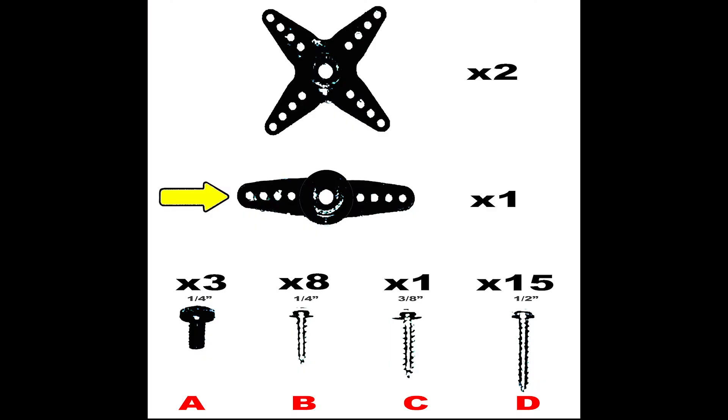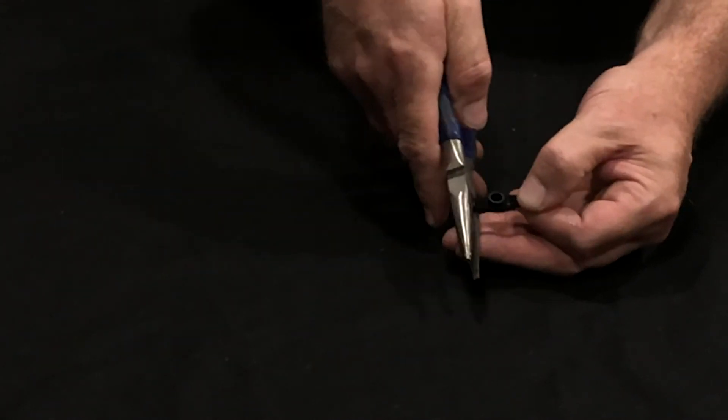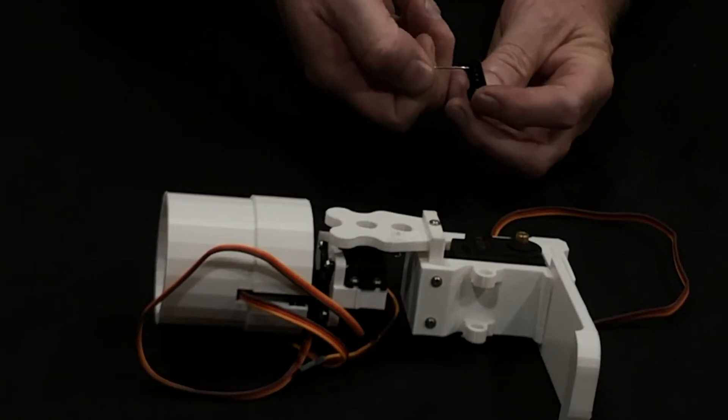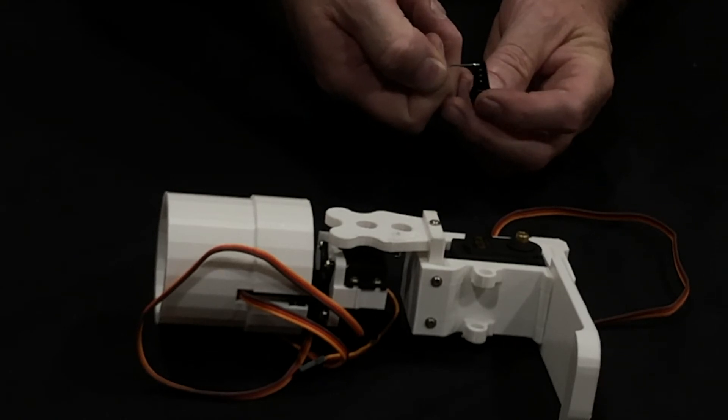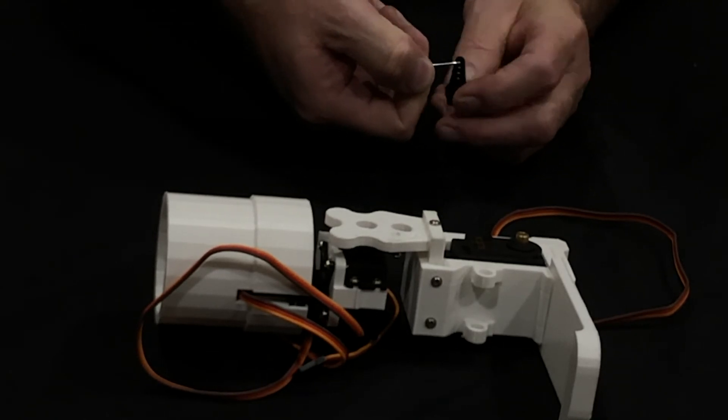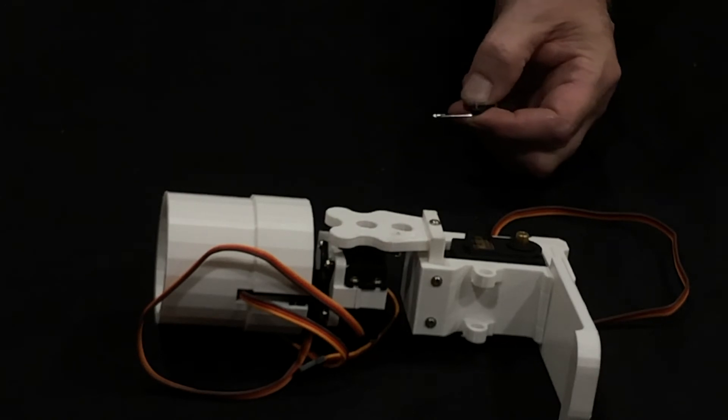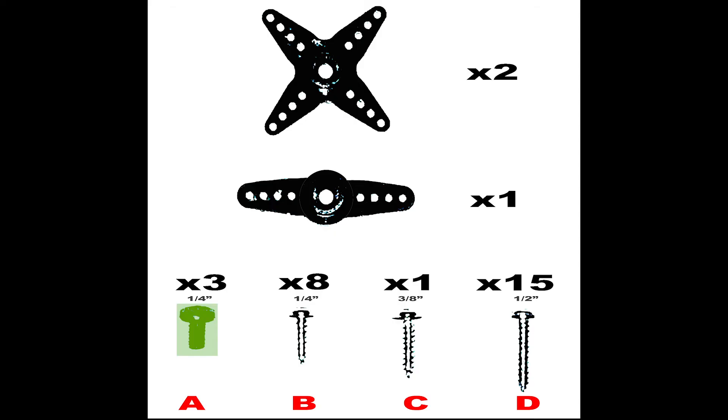Take the two-arm servo horn, and using your pliers, we'll clip off one side. We'll then hook our wire into the servo horn and screw that into place.